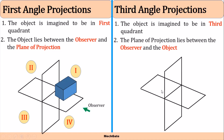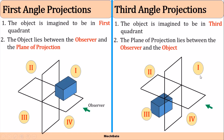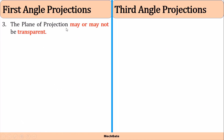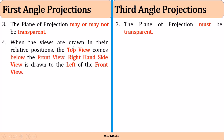Similarly, in third angle projection, the object is kept in the third quadrant. The plane of projection lies between the observer and the object. To view the object from this side, the vertical plane must be transparent. So the plane of projection may or may not be transparent in first angle projection, because we do not need to see through the plane, while in third angle projection the plane of projection must be transparent.